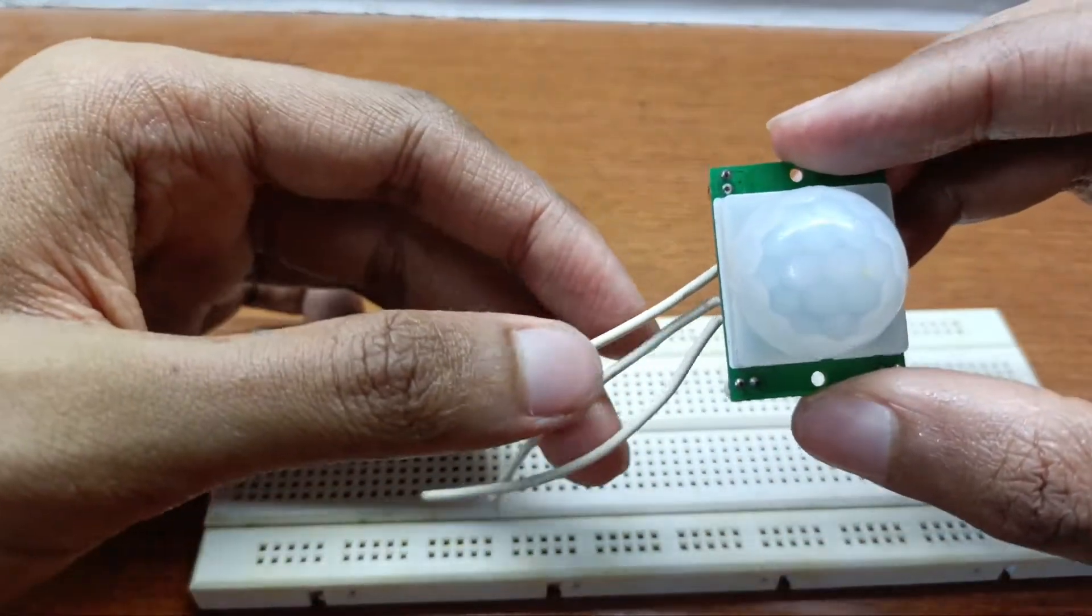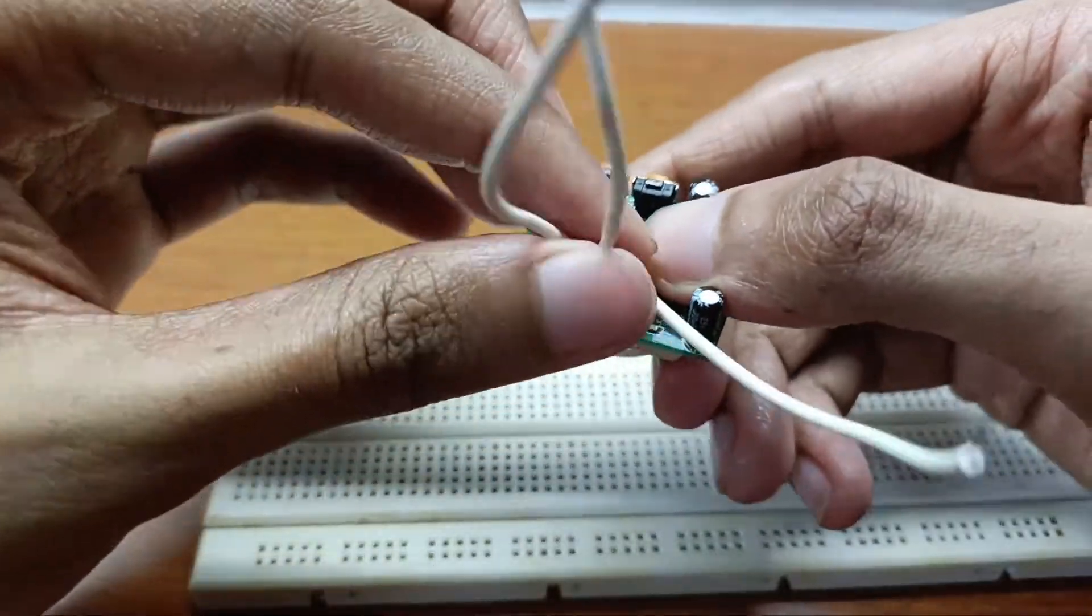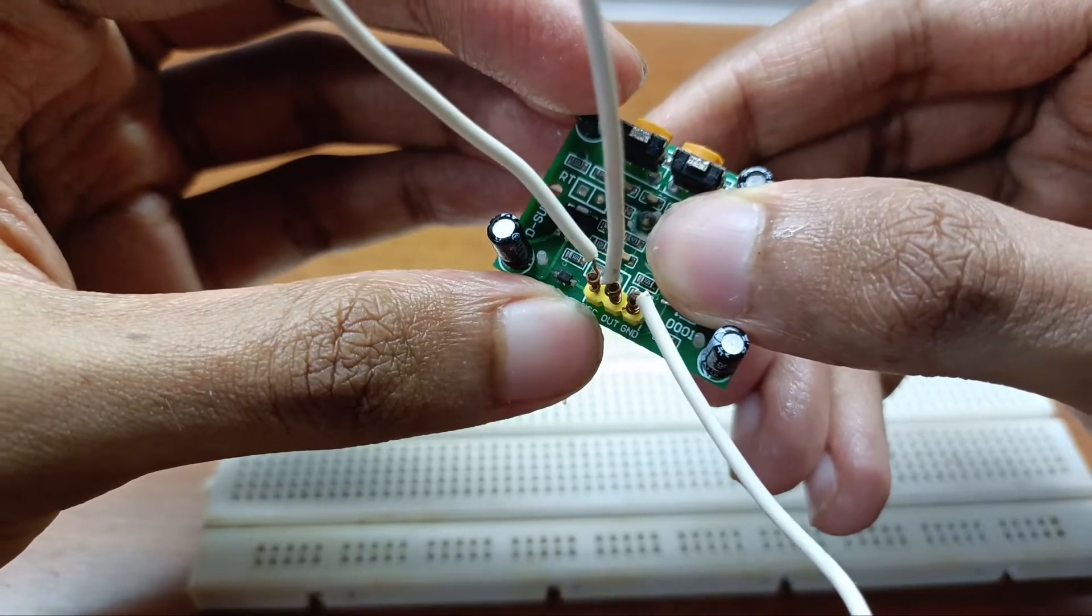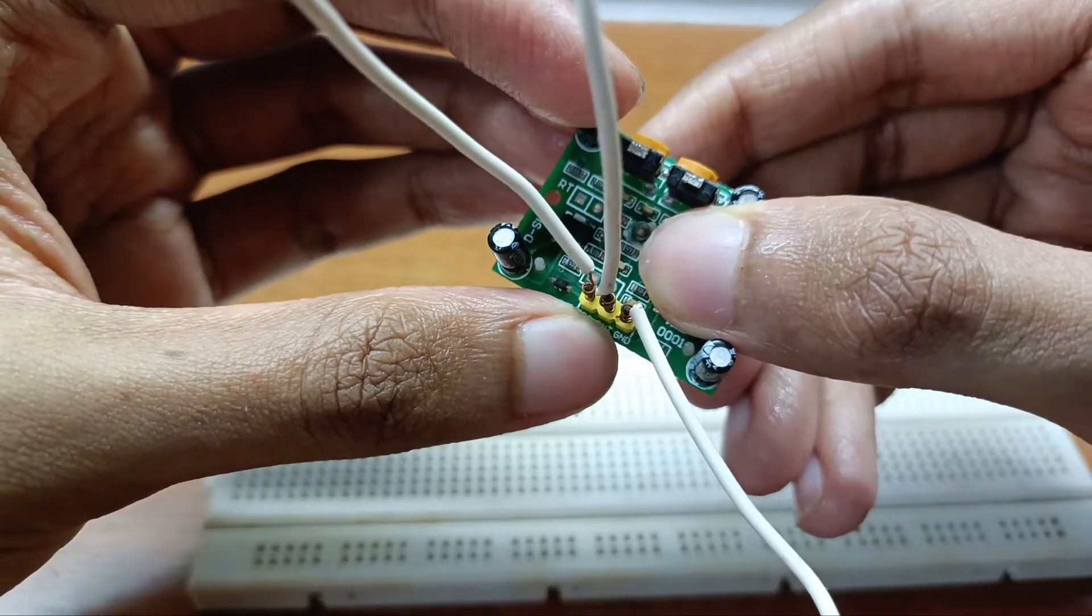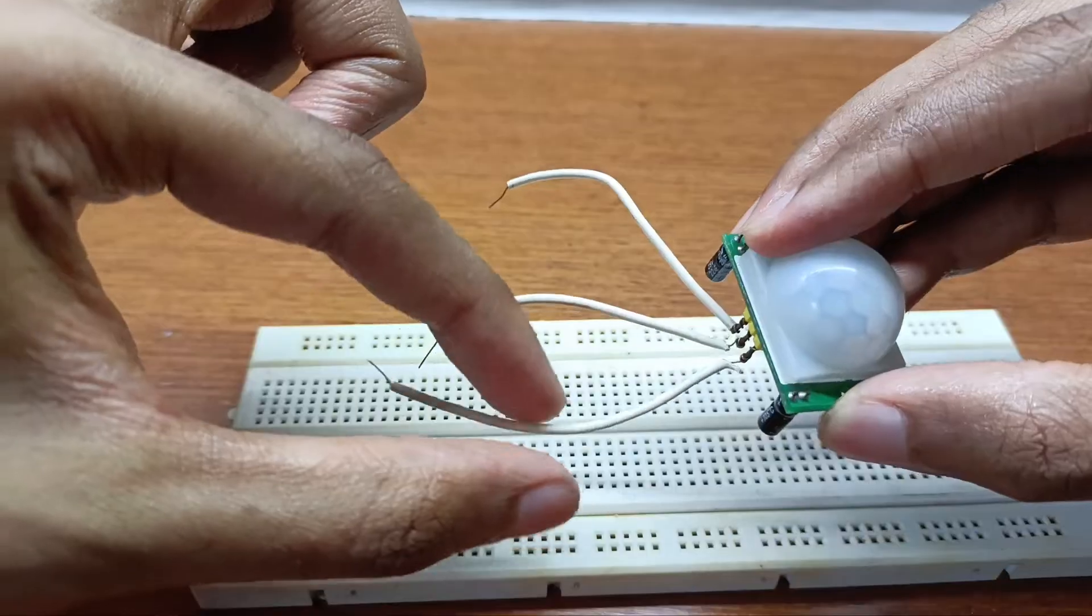This is a passive infrared PIR sensor. It has three pins. The first pin is called VCC, the center pin is the output, and the third is the ground.